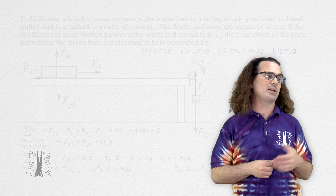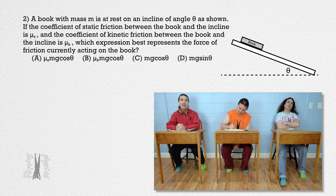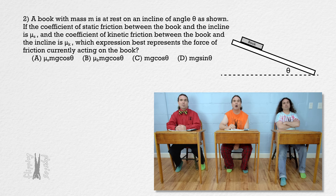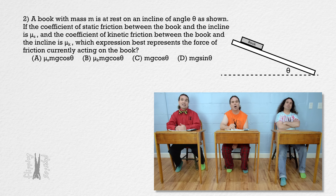Please read the next question. Question 2: A book with mass m is at rest on an incline of angle theta. If the coefficient of static friction is mu_s and the coefficient of kinetic friction is mu_k, which expression best represents the force of friction currently acting on the book? Choice A: mu_s times m times g times cosθ. Choice B: mu_k times m times g times cosθ. Choice C: m times g times cosθ. Or choice D: m times g times sinθ.